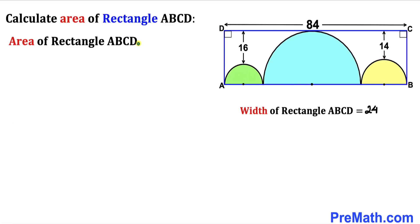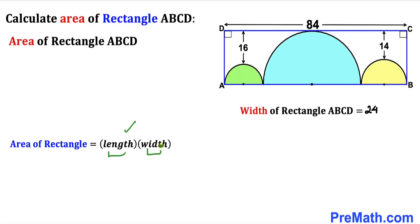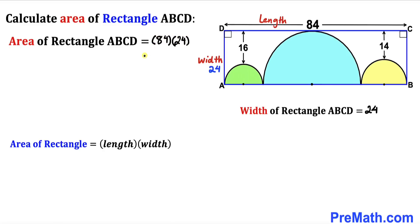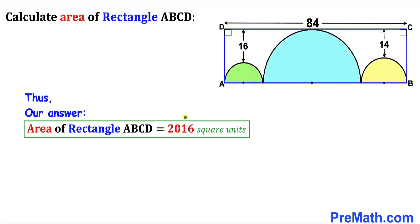Now for the final step: let's calculate the area of rectangle ABCD. Recalling the area formula, area equals length times width. The length is 84 and the width is 24. So the area of rectangle ABCD equals 84 times 24, which gives us 2016 square units.